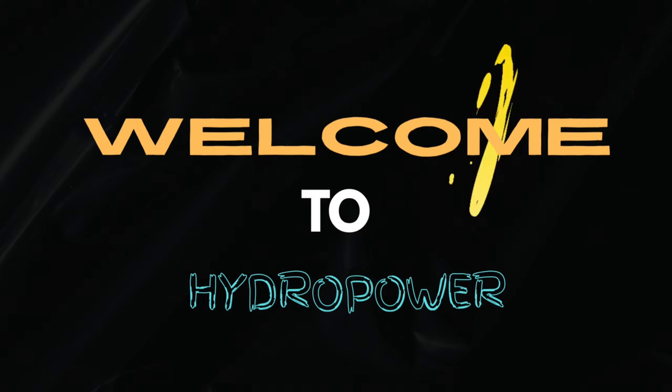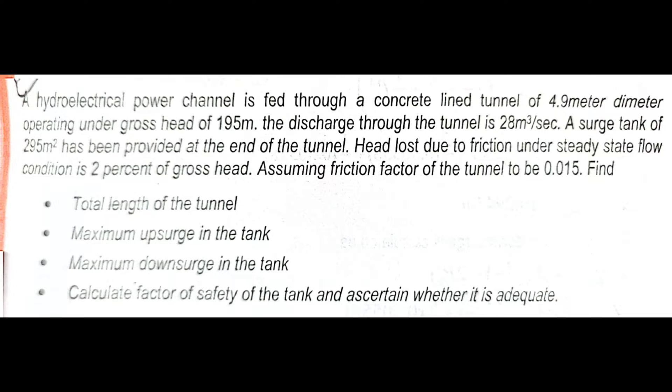Hello everyone, welcome to our channel. Today we'll solve a numerical problem related to transient analysis of pipes and relief devices. The question is: a hydroelectric power channel is fed through a concrete lined tunnel of 4.9 meter diameter operating under gross head of 195 meters. The discharge through the tunnel is 28 meter cube per second.